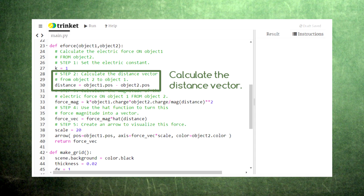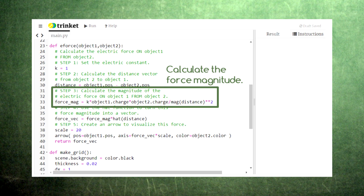Next, we calculate the distance vector from object 2 to object 1. This is the line that determines which object is exerting the force and which one is experiencing the force. Next, we calculate the magnitude of the force from object 2 on object 1. This calculation has all of the features we examined earlier.